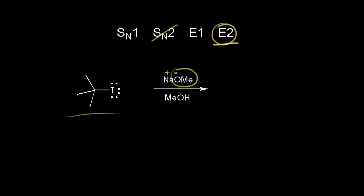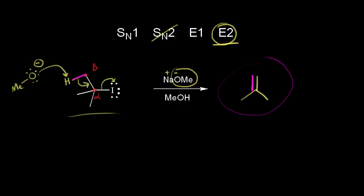In the E2 reaction, the methoxide ion functions as a base and takes a proton from the alkyl halide. The carbon bonded to the halogen is the alpha carbon; the carbons directly bonded to it are the beta carbons, and here the beta carbons are identical. The methoxide ion takes a beta hydrogen; those electrons move in to form the double bond, and the electrons come off to give the iodide ion as the leaving group. Since all beta carbons are the same, this is the only product.